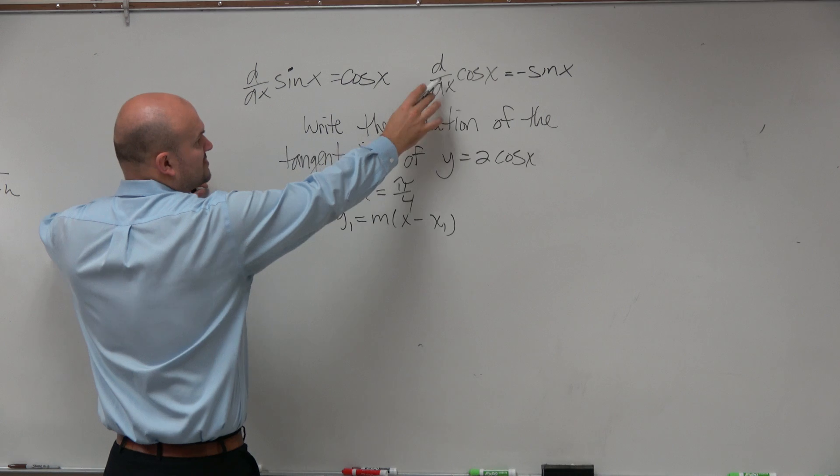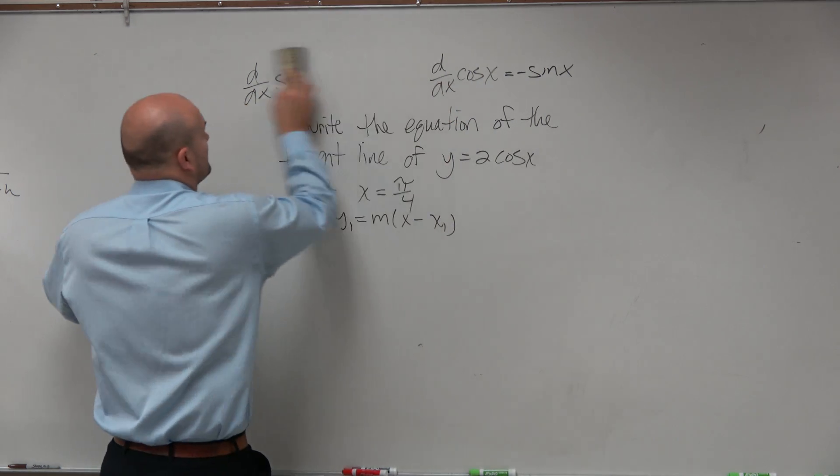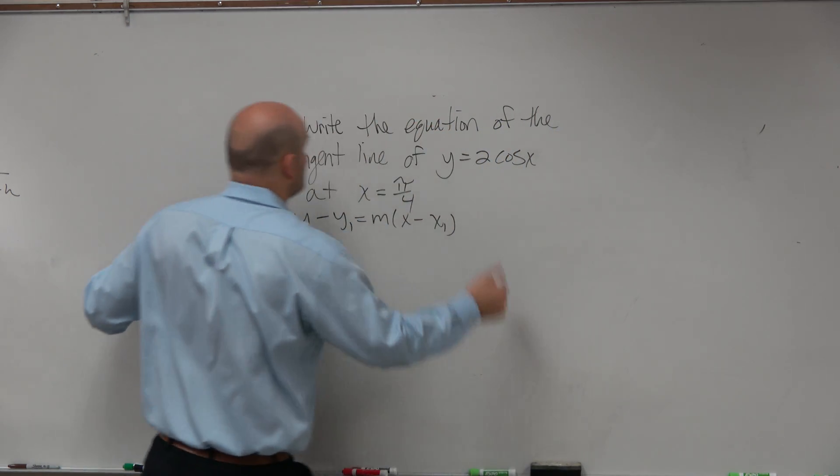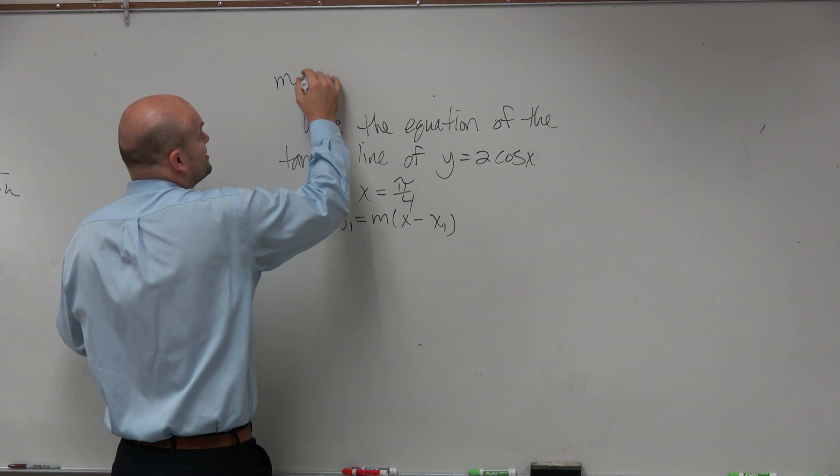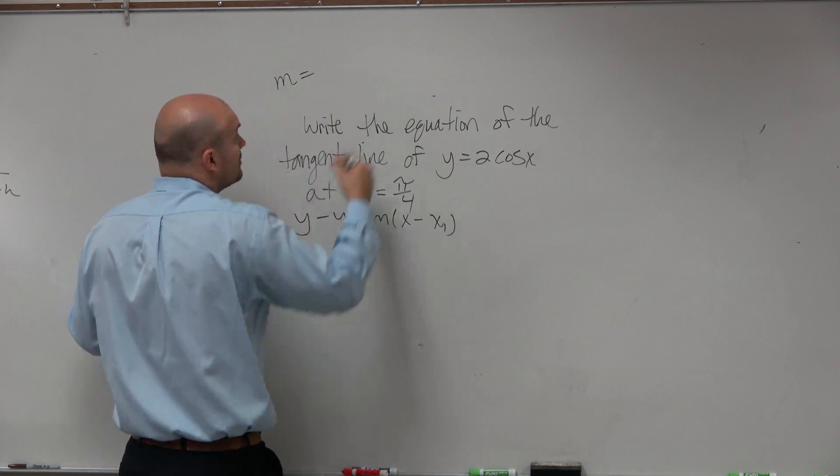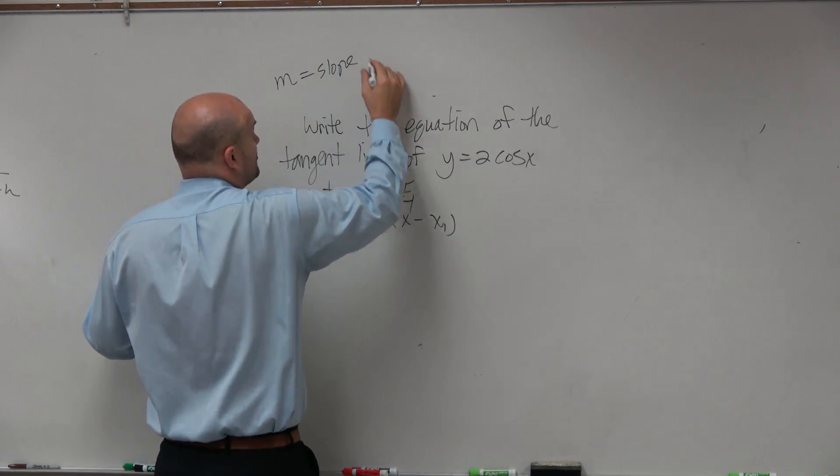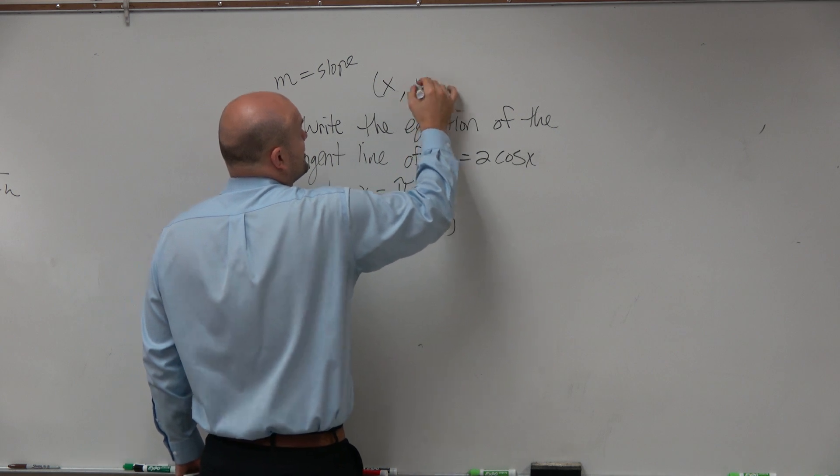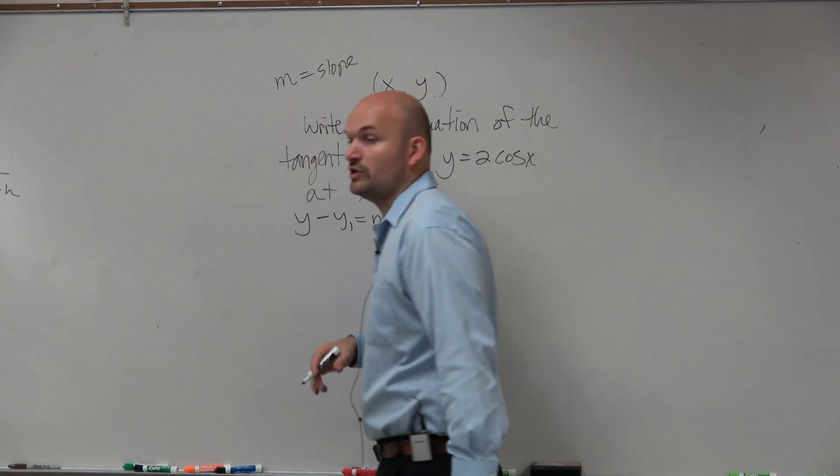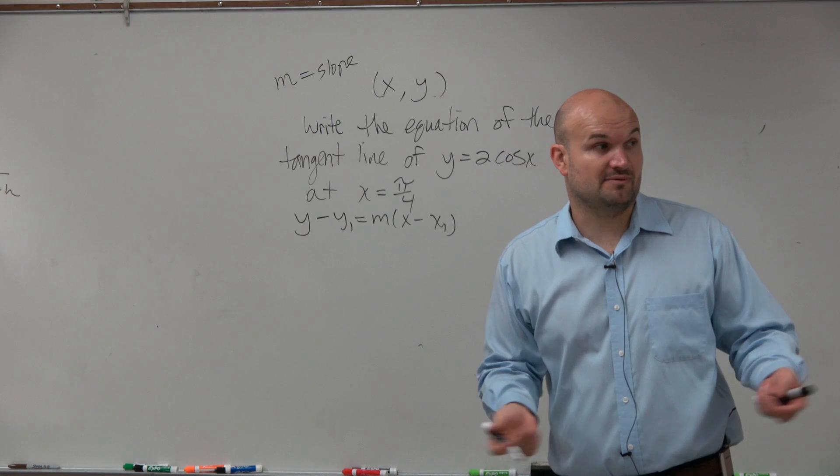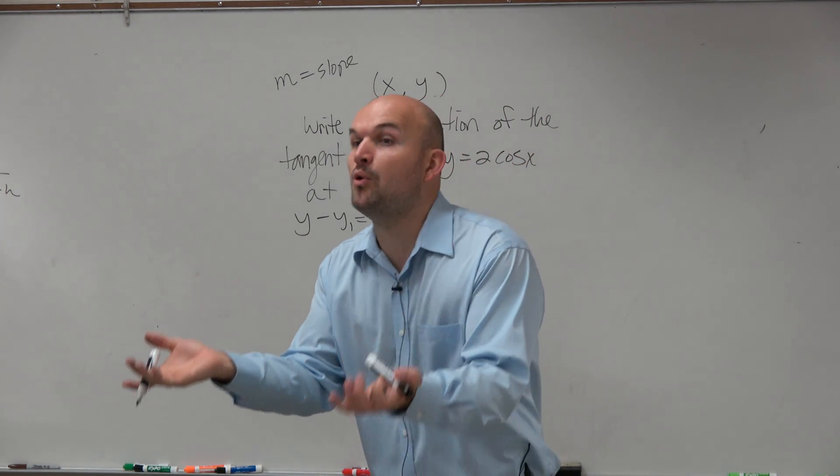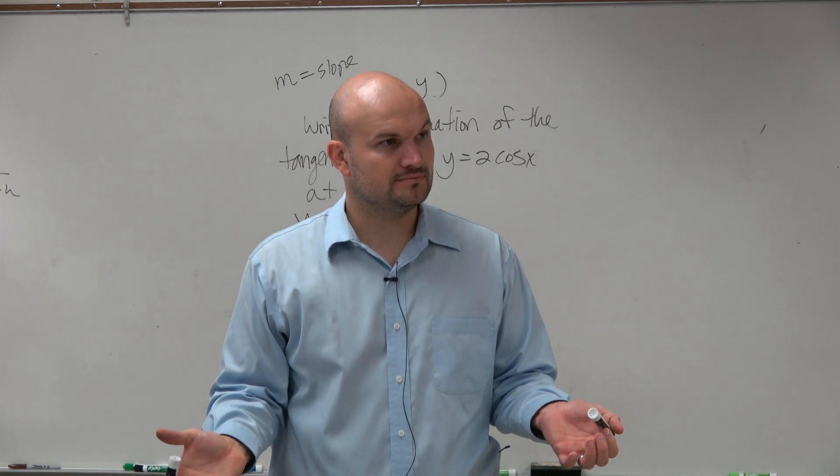Now again, we know the derivative of cosine is going to be negative sine of x. So we'll get that memorized by tomorrow. We need to know what the slope is, and we need to know what the x and y coordinates are. If we want to write the equation of a line, we need to have a point and we need to have the slope, correct?